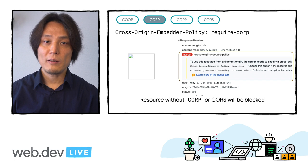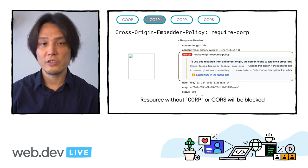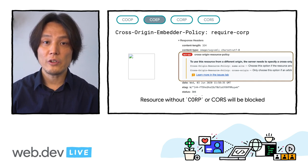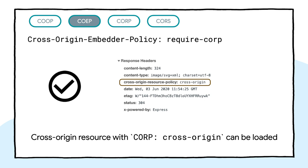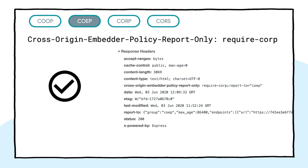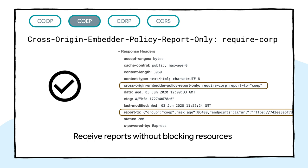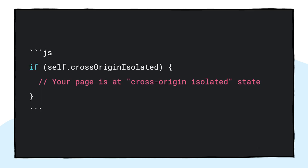With Cross-Origin-Embedder-Policy require-corp, you can let the webpage only load resources that are explicitly marked as shareable, unless they are served from the same origin. For example, an image served from cross-origin without a CORP header will be blocked. By setting Cross-Origin-Resource-Policy to cross-origin, the image can be displayed. Note that if you use the report-only mode of COEP, you can send reports to a specified URL without actually blocking those resources. I recommend deploying COEP starting with report-only mode — that way, you can confirm cross-origin isolation is in effect without affecting end users. Once your page is loaded with COOP and COEP, it should be in a cross-origin isolated state. You can verify this by checking the self.crossOriginIsolated boolean flag in JavaScript.